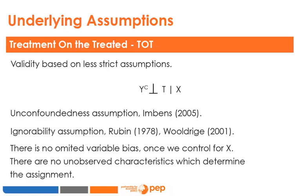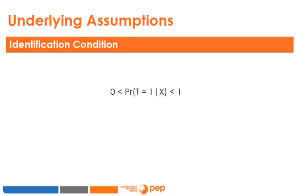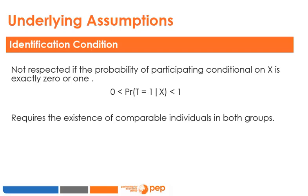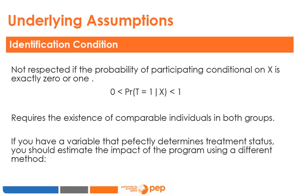The identification assumption is not respected if the probability of participating in the programme conditional on X is 1 or 100%. For example, the probability of receiving treatment among individuals under the age of 20 could be 1 because they are automatically admitted. All subjects under 20 are in the treatment group, and as a result there are no observations with this characteristic in the comparison group to calculate a counterfactual. The identification condition requires comparable individuals in both groups. If a variable perfectly determines the treatment, you should use a different method called regression discontinuity design, which will be addressed in a future module.